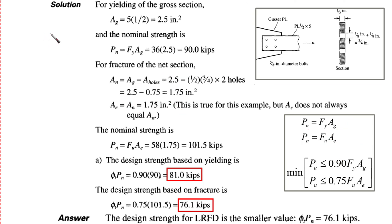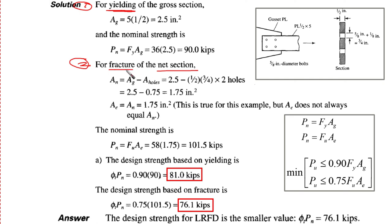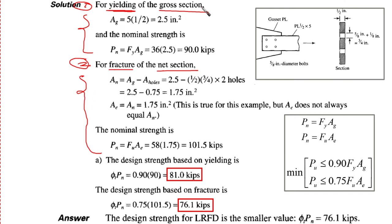The solution involves two failure modes. First, we check yielding of the gross section, and second, we check fracture of the net section. We calculate the nominal strength based on yielding of the gross section, and also the nominal strength based on fracture of the net section.